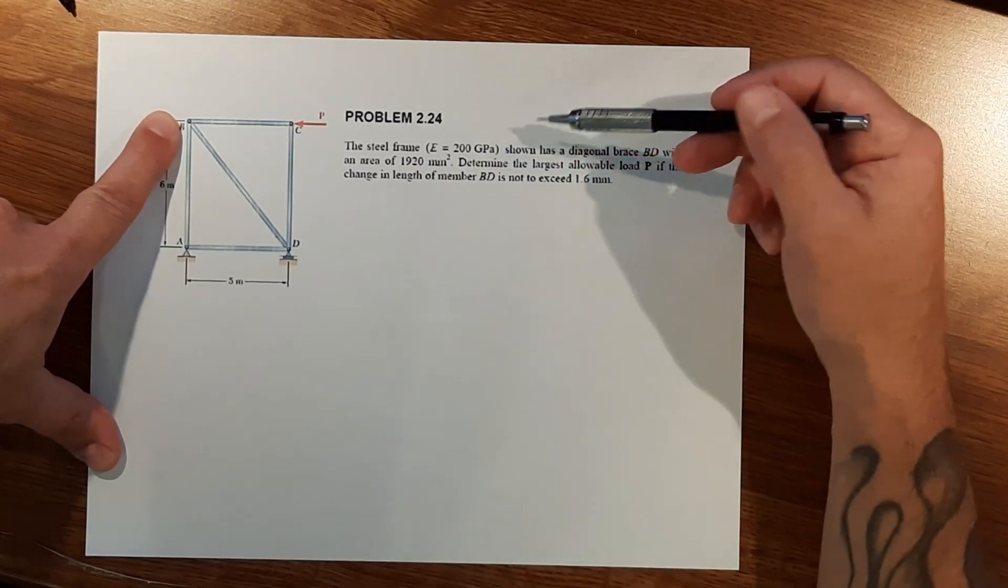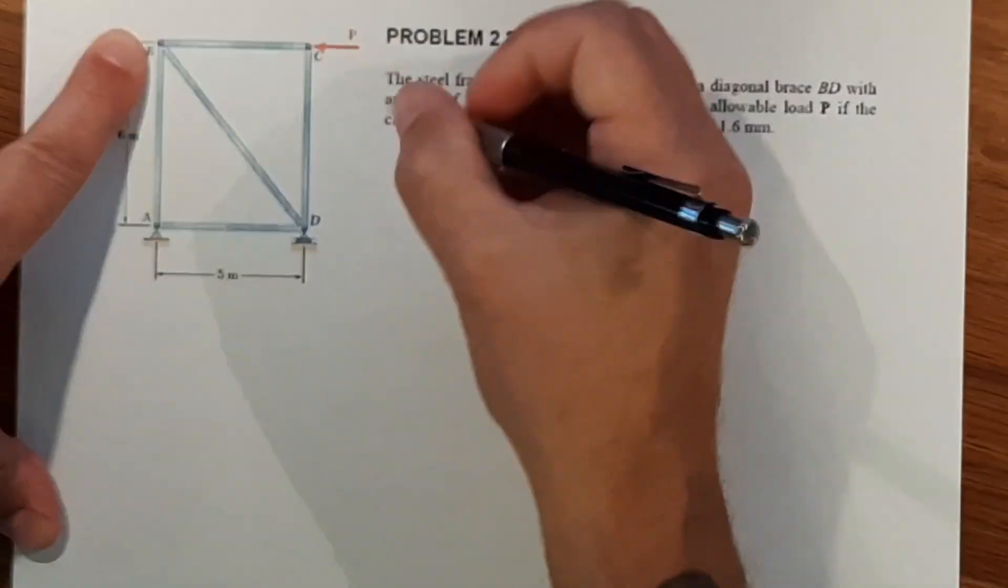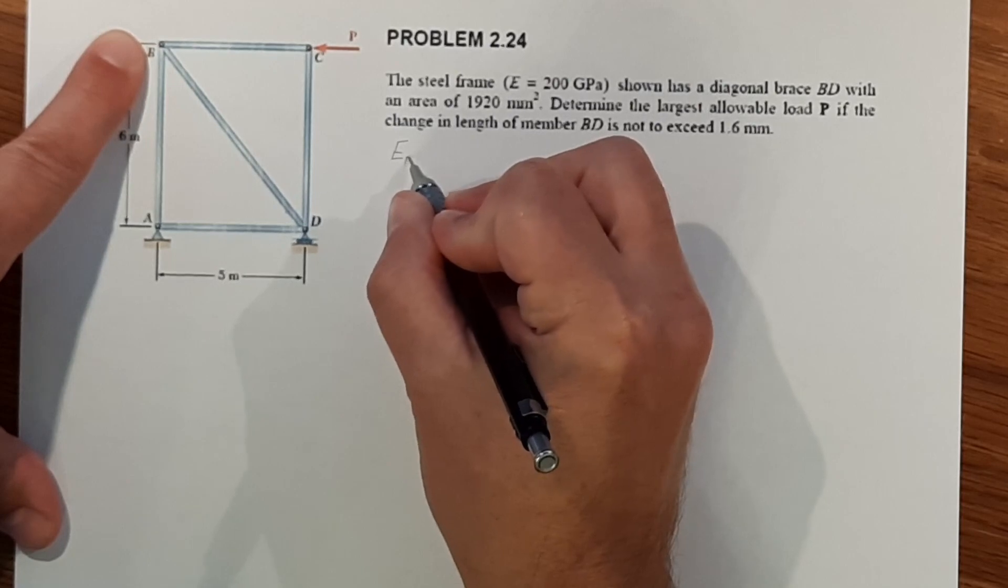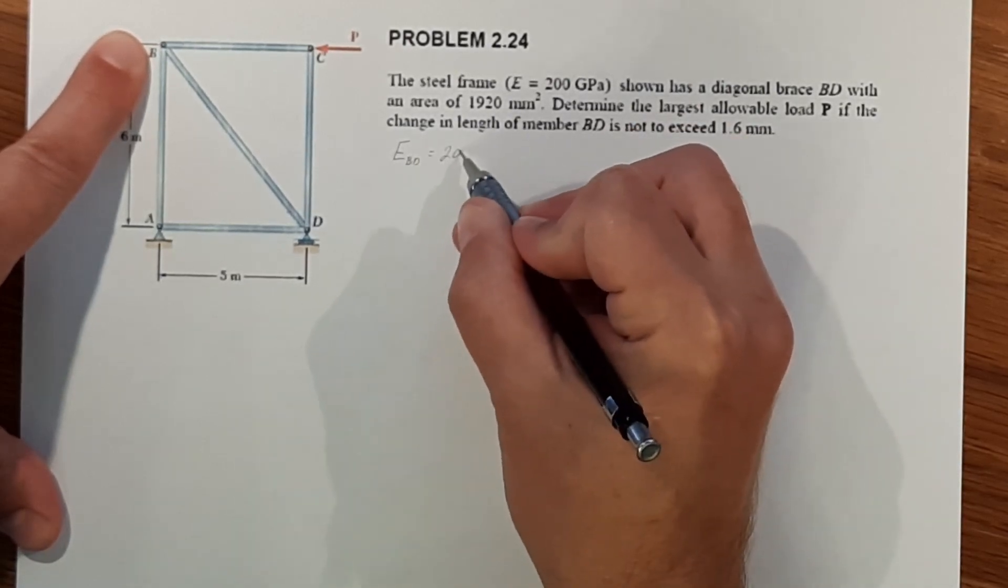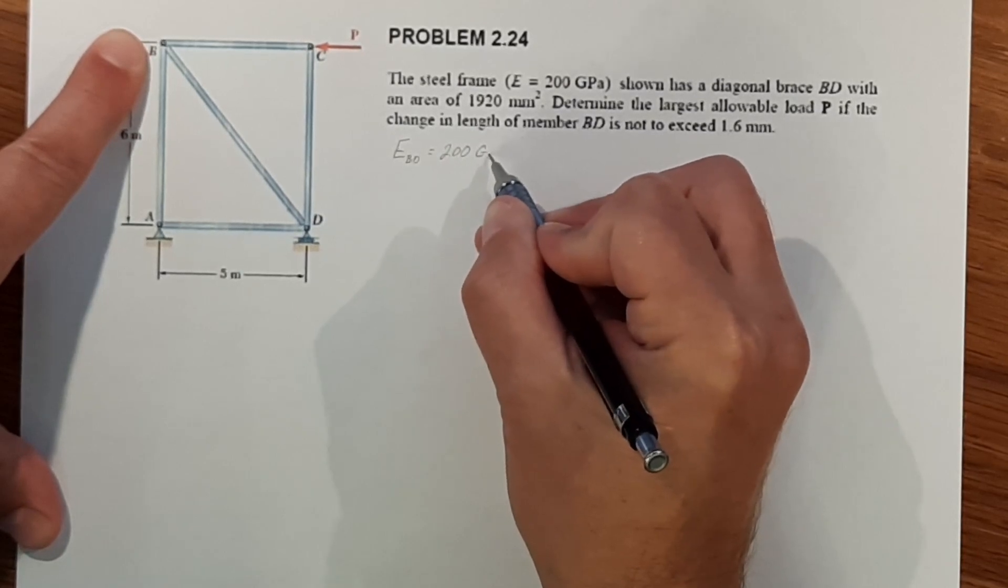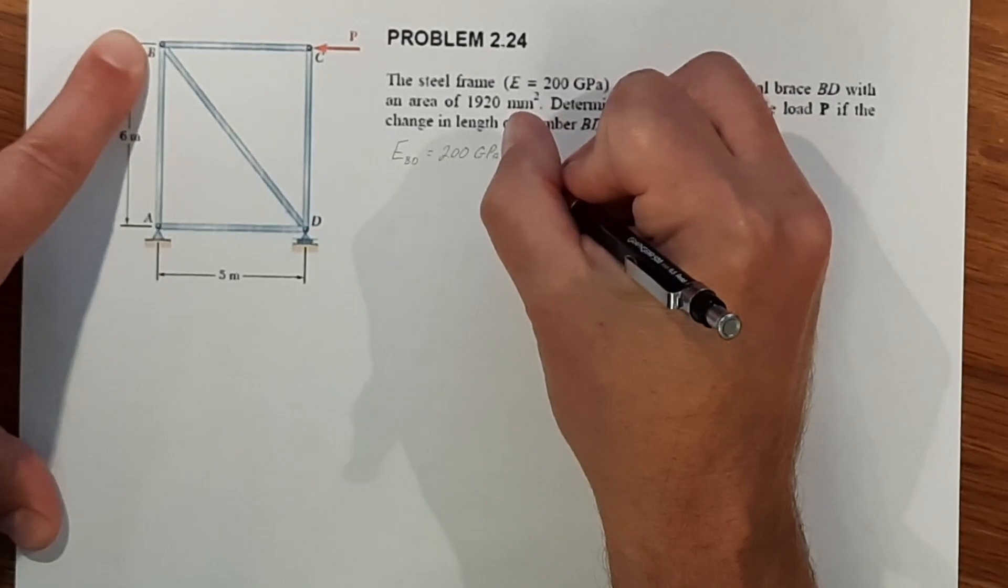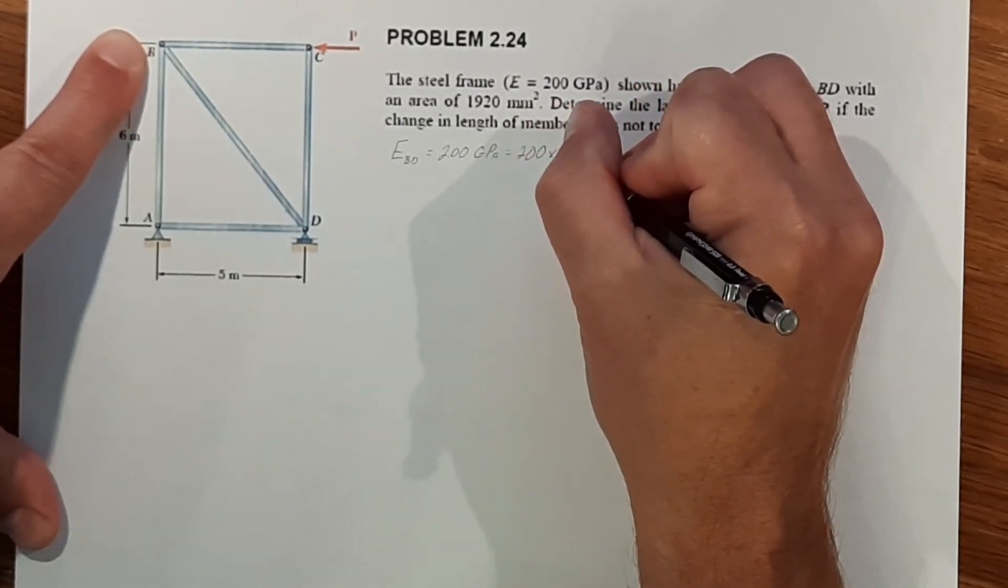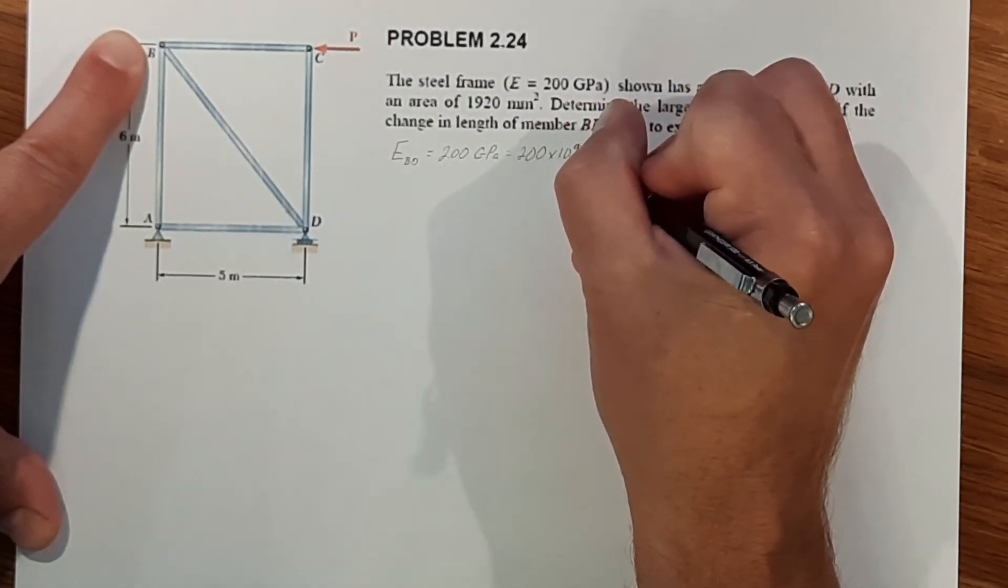We have some values here. The modulus of elasticity of BD. Let's go ahead and write this down. So modulus of elasticity of BD is equal to 200 gigapascals or 200 times 10 to the ninth pascals.